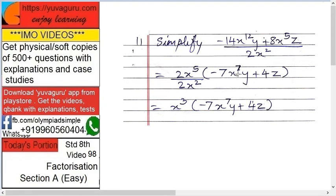Inside the bracket: minus 7x raised to 7 y — because 14x raised to 12 equals x raised to 5 into x raised to 7, with y as it is — plus 4z, since 8 divided by 2 gives 4, and x raised to 5 remains. After simplification it becomes x cubed into minus 7x raised to 7 y plus 4z. That is the required answer.